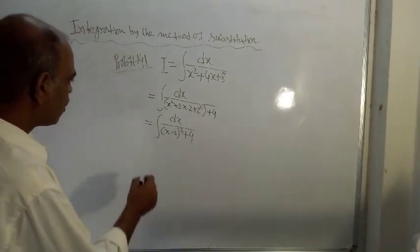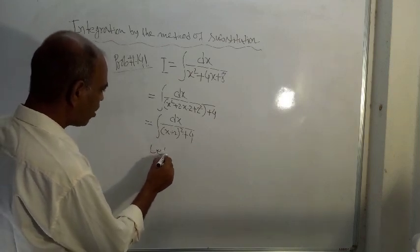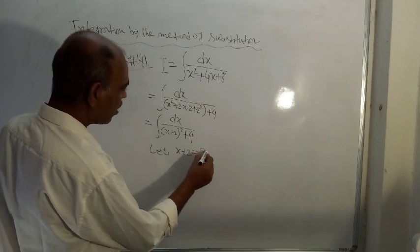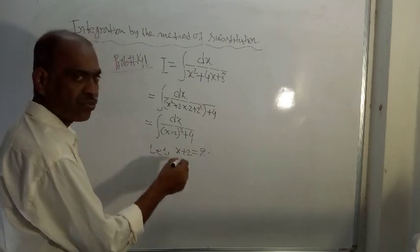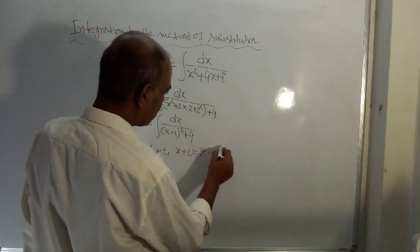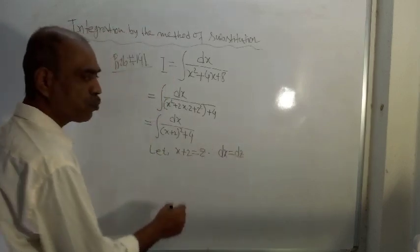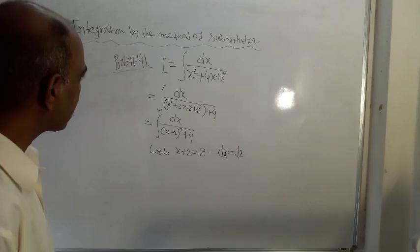Right. Now x plus 2 is equal to z, and differentiate both sides of this. So on differentiation we get dx is equal to dz because derivative of 2 is 0. 2 is a constant.